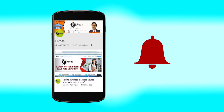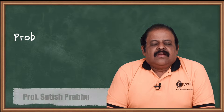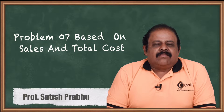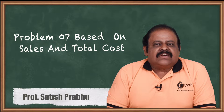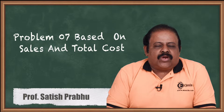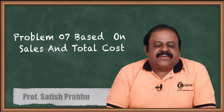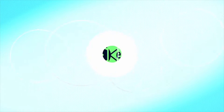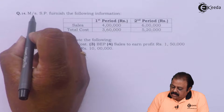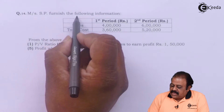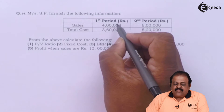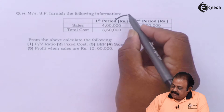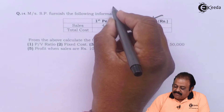Hello friends, today we'll be discussing one marginal cost question where we have information of two different years' sales and two different years' total cost. Let us see how to find out the various values when these two pieces of information are given. The information is given for two periods — first period and second period — which we can consider as one year each.